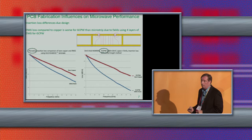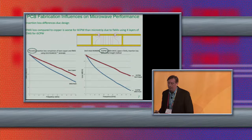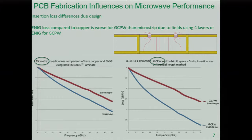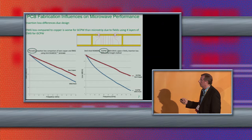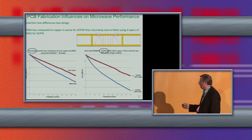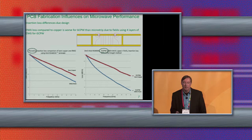Comparing measurements using 8-mil 4003C: for microstrip, the difference between bare copper and ENIG is about 0.5 dB per inch out at 50 gigahertz. For the same type of testing using a tightly-coupled grounded coplanar waveguide out to 50 gigahertz, the difference between bare copper and ENIG is much more — about 1.2 dB per inch. So the circuit structure itself makes a difference, and if it's coupled, that's even more of a difference.